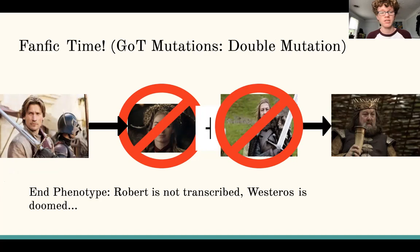Now, a double mutation is an entirely different story, where Jaime is still active and tries to promote Cersei, but remember Cersei's not there, so she can't inhibit Ned, who also isn't there. But if Cersei can't inhibit Ned, and Ned can't promote Robert, then Robert Baratheon is not transcribed, and Westeros is doomed.